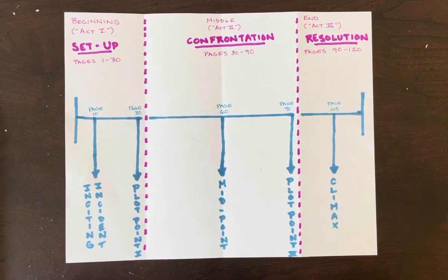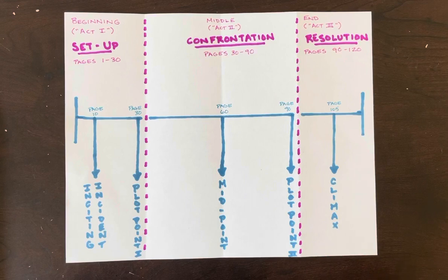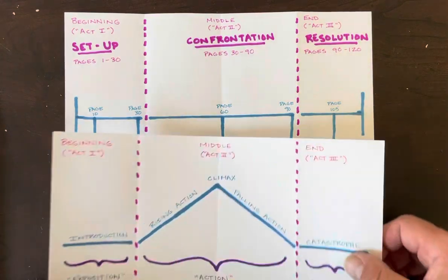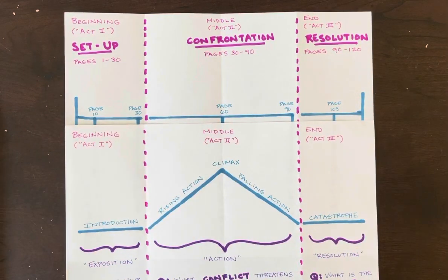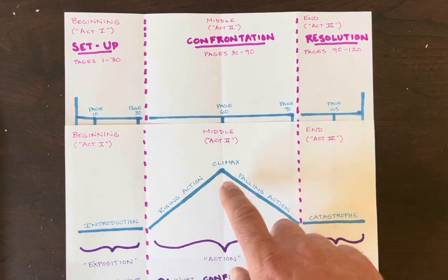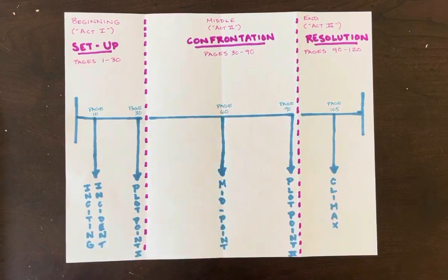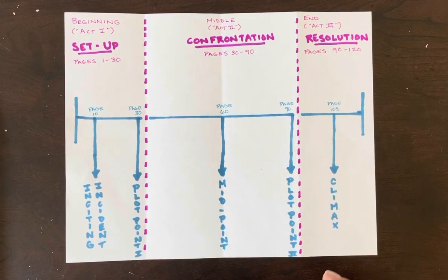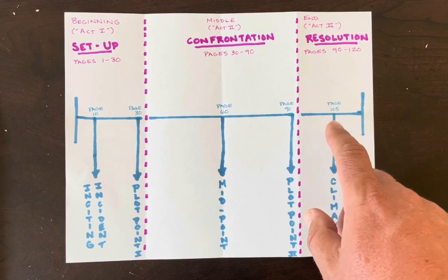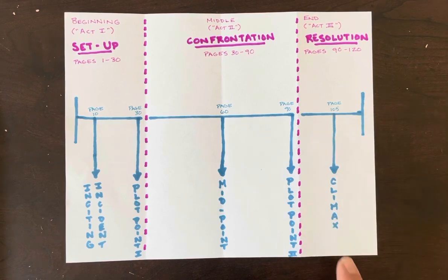It's when we start to think about these five plot points in Field's paradigm that what we learn from Freytag starts to apply, especially his theories about the climax and how the action of a drama should rise toward the climax and fall away from it. You'll notice, though, that while Freytag placed the climax in the middle of his pyramid, Field instead places the climax in the third act — the resolution of his paradigm.